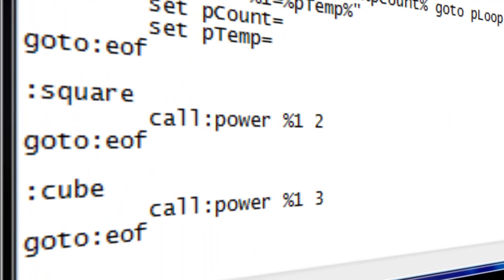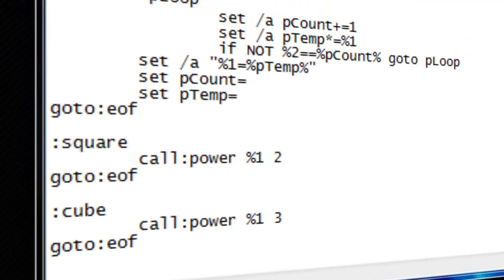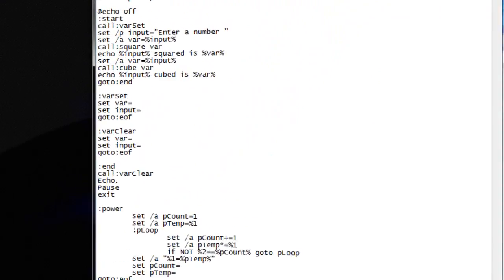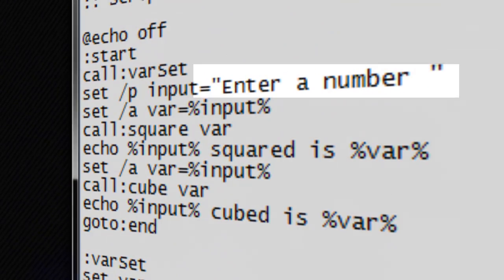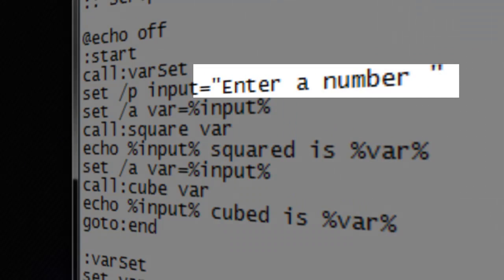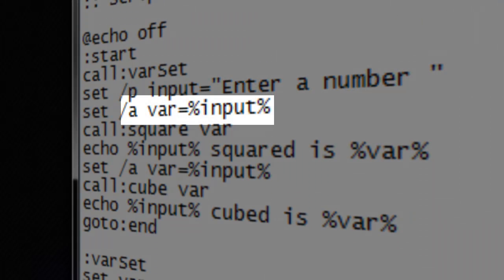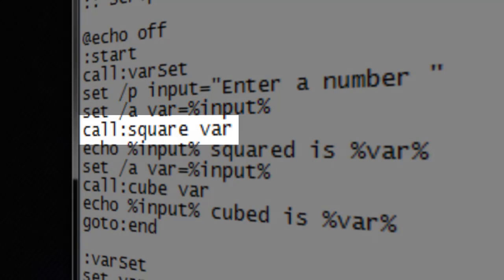Here we take a look at these square and cubed functions. Within our start label, we get a number from the user. We then create a number variable, var, giving it the value entered from the user. We call the square function with an argument of var.